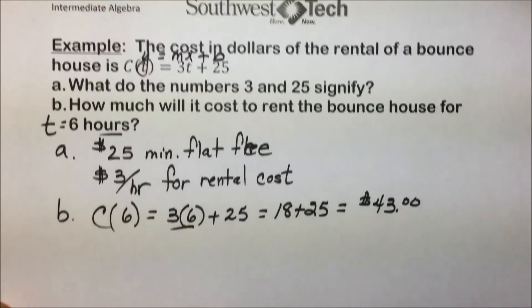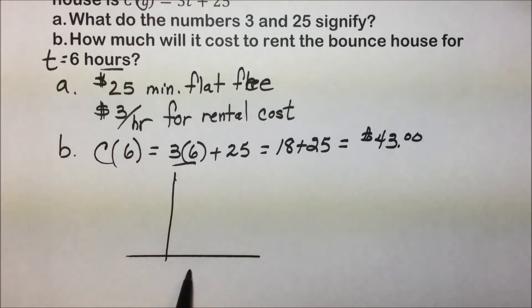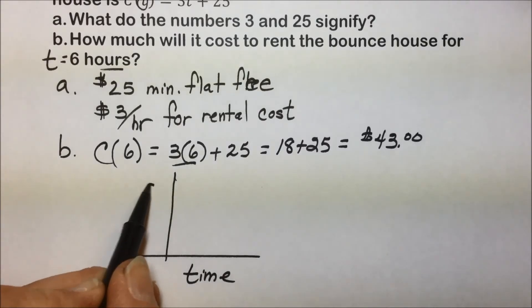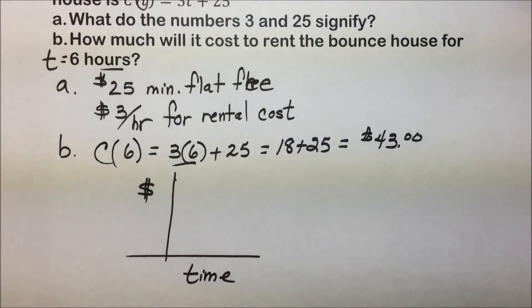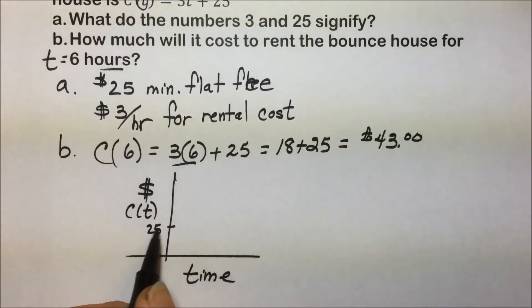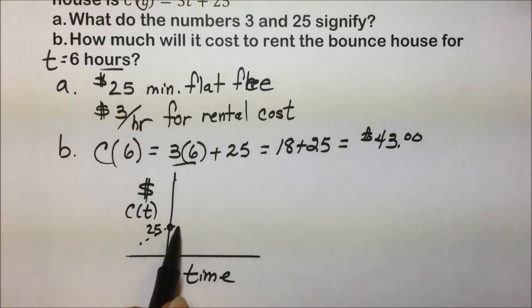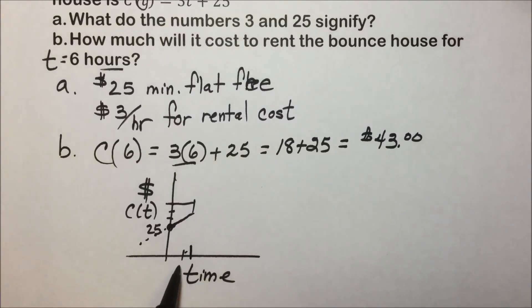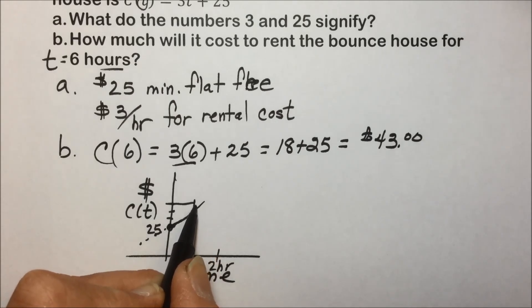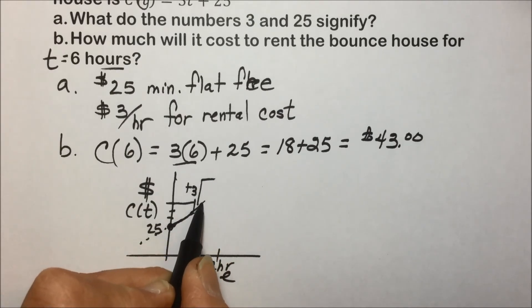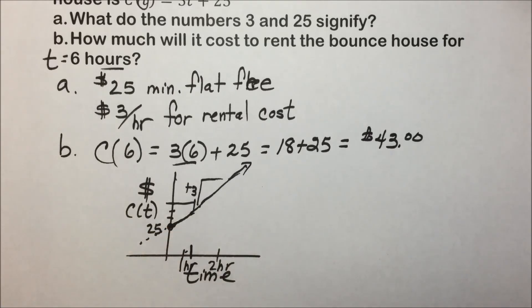The second part asks how much it will cost to rent a bounce house for 6 hours. Essentially, when T = 6, we replace T with 6 and simplify: 3 times 6 is 18, plus 25, following order of operations, gives us a total rental cost of $43.